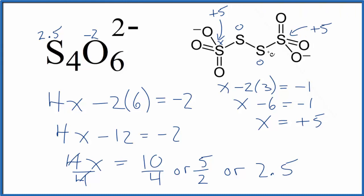Since we have four sulfurs, and we have a total of five plus five, 10, we end up with that 10 over four for the average for the sulfur here in S4O6 two minus.